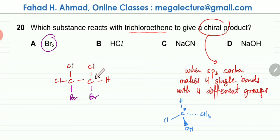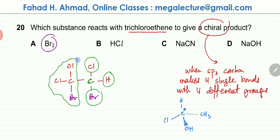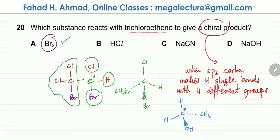Looking carefully at this carbon atom, it is bonded to four different groups: an H on one side, a Cl on one side, a Br on one side, and an entire group on the other side. So this carbon atom is making four single bonds with four different groups — it is chiral. Option A, bromine, is the correct option. The tetrahedral carbon atom with four different groups will form two mirror images, i.e., optical isomers.